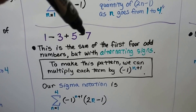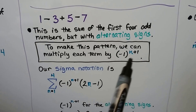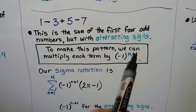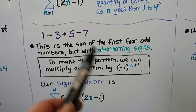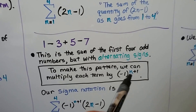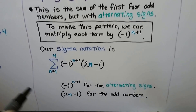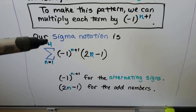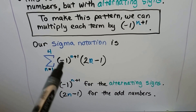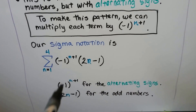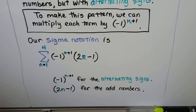Notice we have a minus, plus, minus — the first four odd numbers but with alternating signs. To make this pattern, we multiply each term by negative 1 to the nth plus 1. Because we have the first four odd numbers with alternating signs, we need to use that factor for the alternating signs and 2n minus 1 for the odd numbers. So our sigma notation has a sigma with 4 up top, n equals 1 going to 4, with negative 1 to the nth plus 1 times the quantity 2n minus 1.